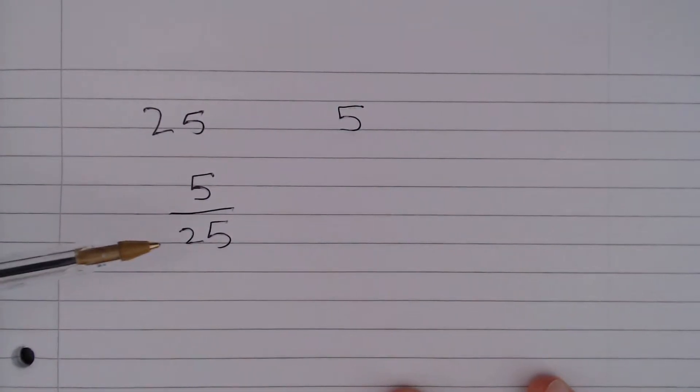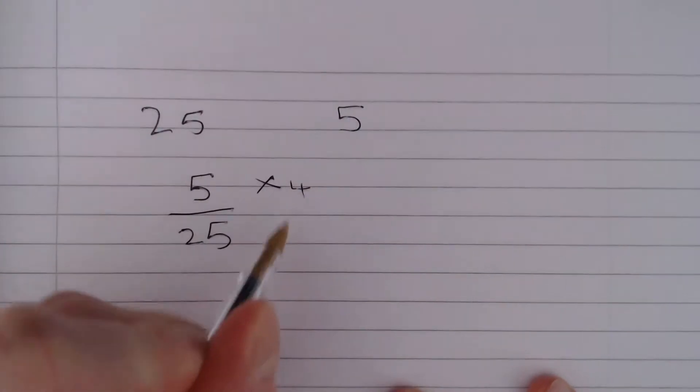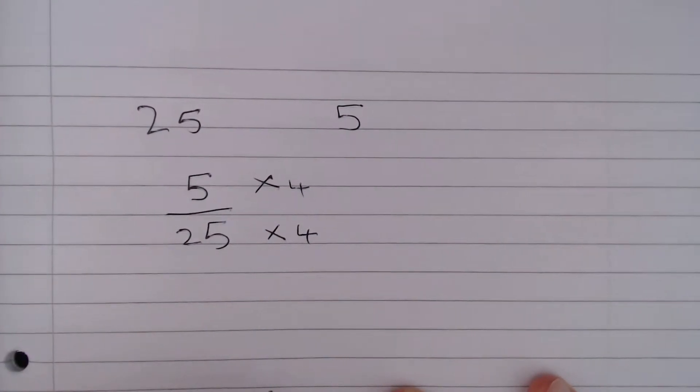Notice how 4 times 25 is 100, so we can get the denominator to say 100, and we can do that by multiplying the top and the bottom by 4.